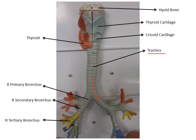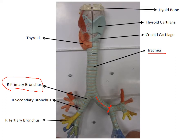As the trachea comes down, it's going to divide because everybody is going to have a right and left lung. Once it divides, the tubes go into each lung. It is going to progressively divide and get smaller and change some of the structures in it. Off of the trachea, there are going to be two primary bronchi — a right primary bronchus and a left primary bronchus. Wherever the primary bronchi divide, the resulting tubes are called secondary bronchi. On the right side, there are two visible here, and actually a third behind.